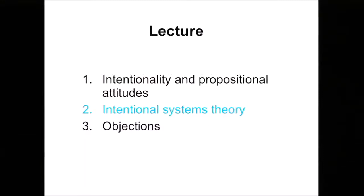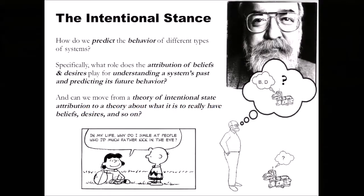Now let's move on to Dennett's Intentional Systems Theory. All Dennett is doing here is giving us an account of what it is that we're doing when we attribute beliefs and desires to various systems. He's asking how we predict or explain the behavior of different kinds of systems, and he wants to understand the role that attribution of beliefs and desires plays when we're trying to understand a system's past and predict its future behavior.